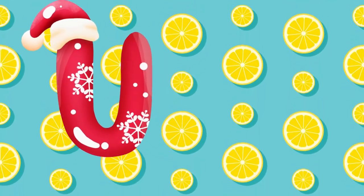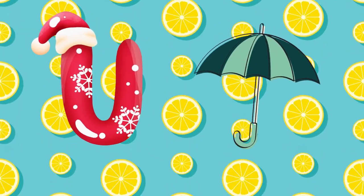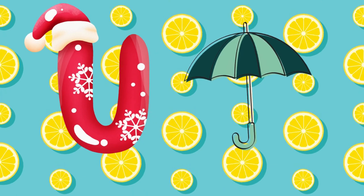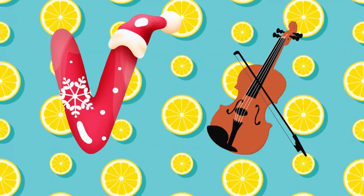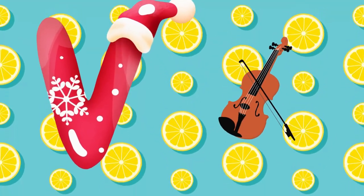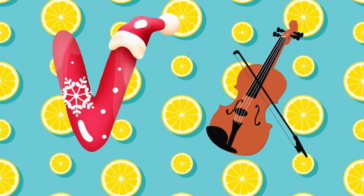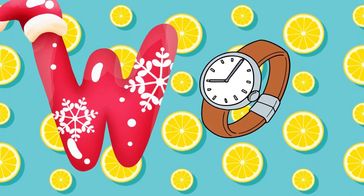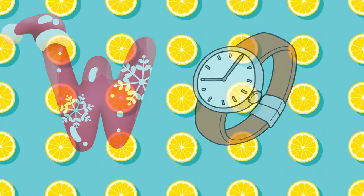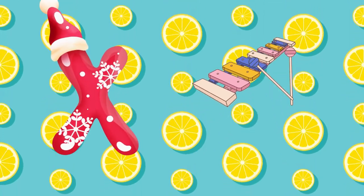U is for umbrella, u-u-umbrella. V is for violin, v-v-violin. W is for watch, w-w-watch. X is for xylophone,